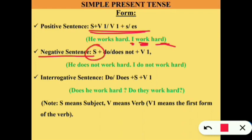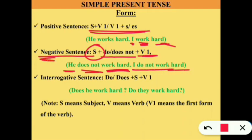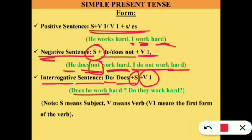In a negative sentence, we use: subject + do/does + not + verb 1. Example: 'He does not work hard,' 'I do not work hard.' In an interrogative sentence, do/does is placed at the front: 'Does he work hard?' or 'Do they work hard?'